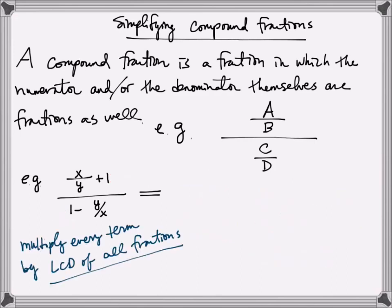The second approach is to multiply every single term in your compound fraction by the LCD of all fractions. In this case, we have one fraction with denominator y and another with denominator x. The LCD of those two fractions will be x times y, because x and y are each distinct factors of the highest power of 1. So my LCD is x times y.